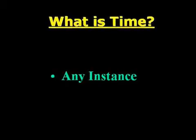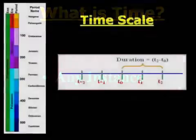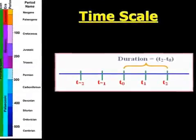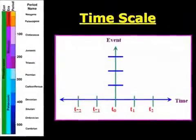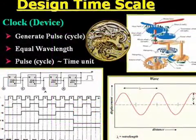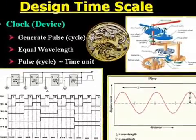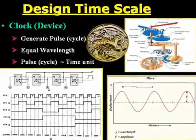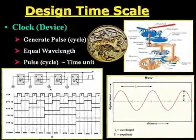Time is any instant, which I will describe later using a different model. We use a scale to reference and understand the linear occurrences of events. Wouldn't it be nice to have another scale to understand parallel occurrences? This linear time scale is designed using a device called the clock, which generates pulses — also called cycles — with equal wavelength. The pulses determine time units.